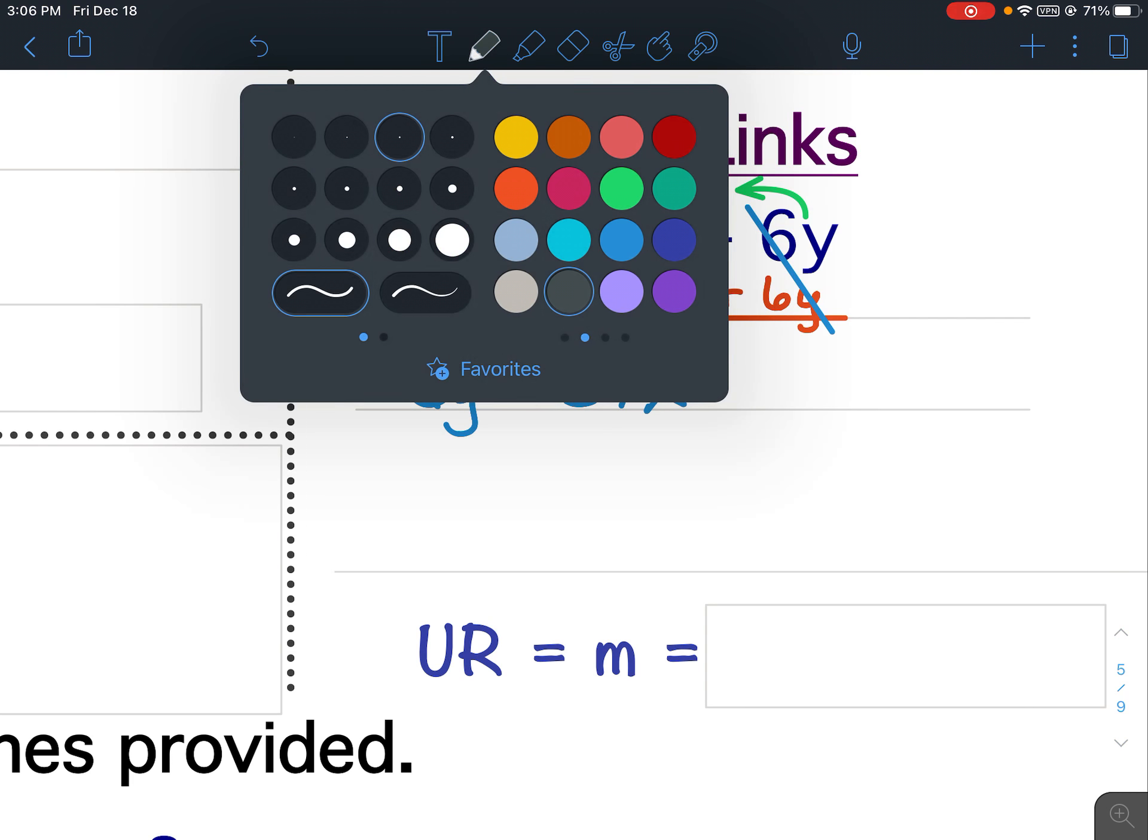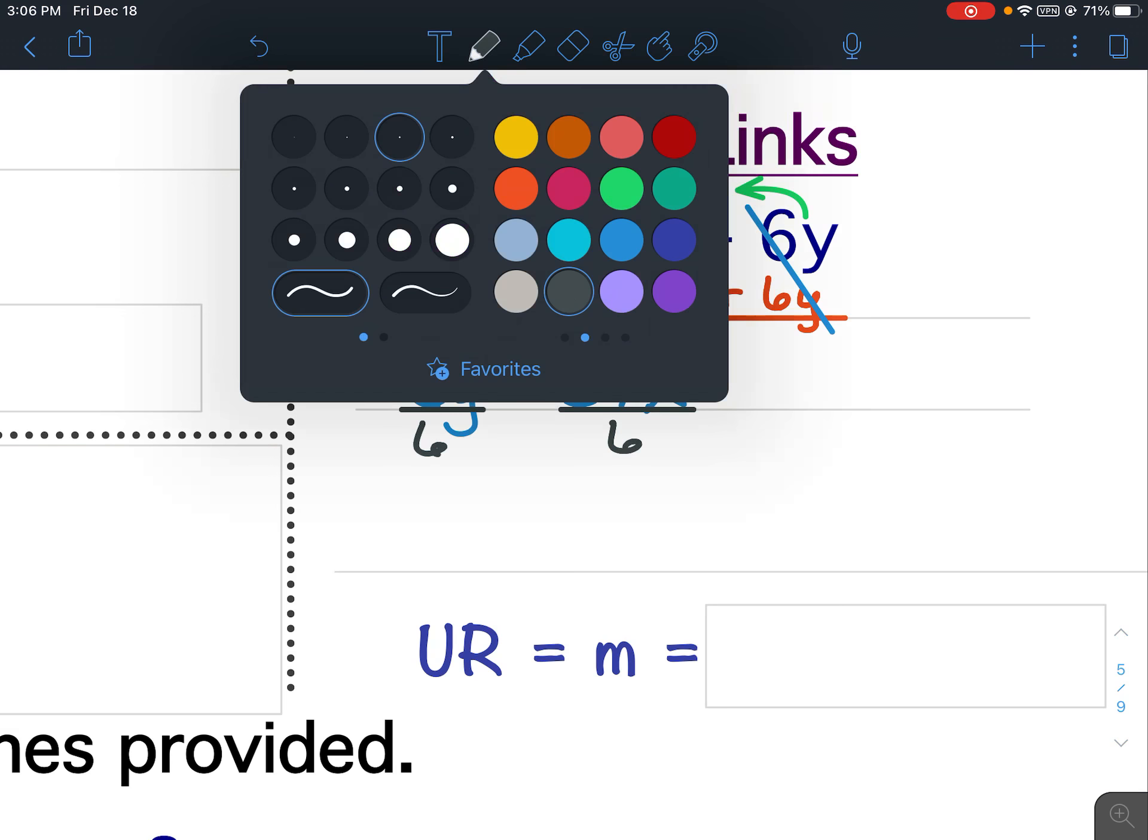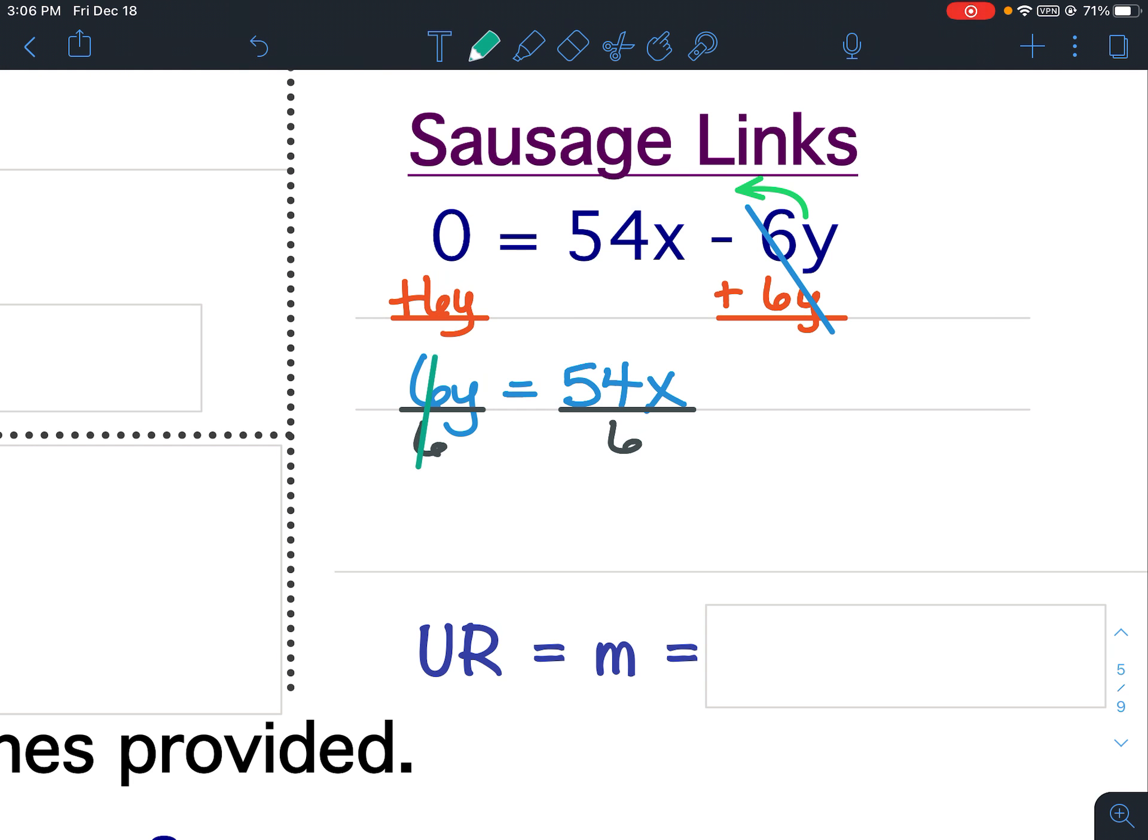I want to get Y by itself, so I want to isolate the Y variable by dividing both sides by 6. Therefore, Y equals 54 divided by 6, which is 9. So Y equals 9X.